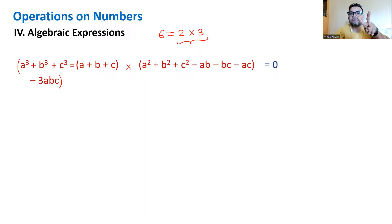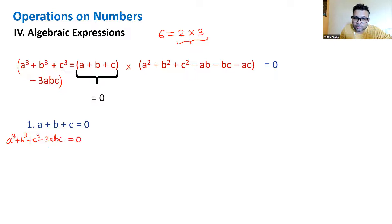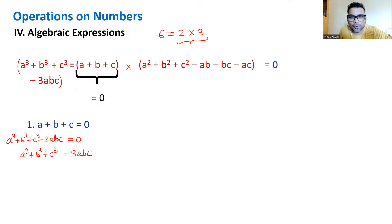Now just imagine if the right-hand side needs to be zero. A product of two numbers is zero when one of them or both of them are zero. So if a+b+c = 0, then a³+b³+c³ - 3abc = 0, which means a³+b³+c³ = 3abc. So the sum of three cubes can be factorized as three times a times b times c.